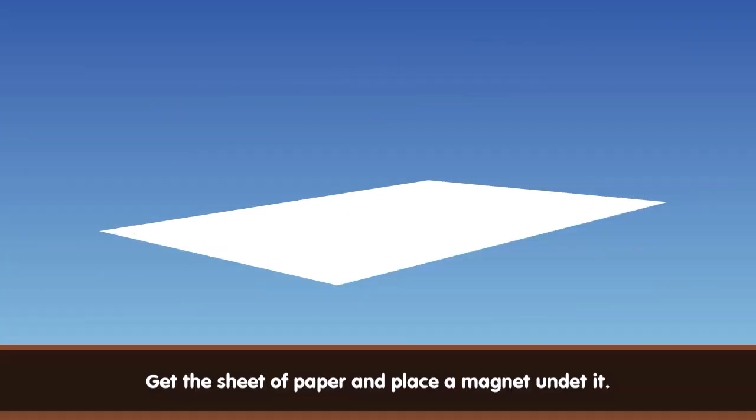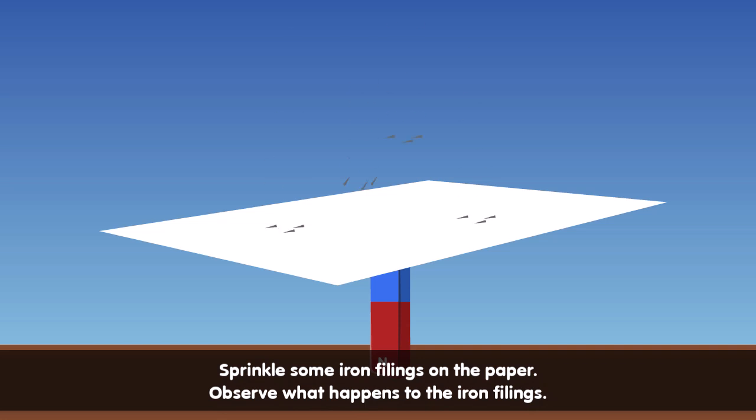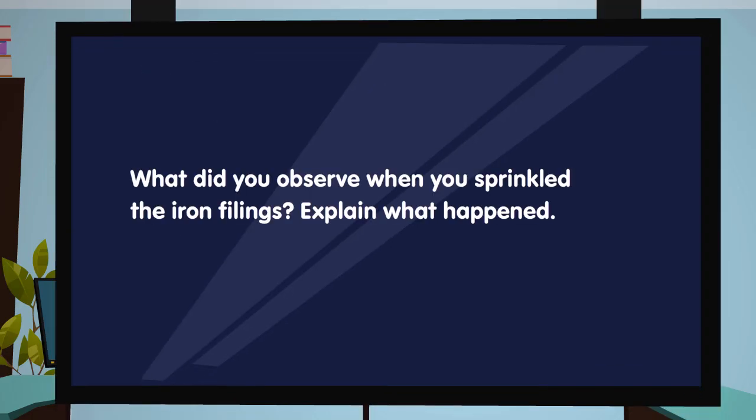Get the sheet of paper and place a magnet under it. Spread some iron filings on the paper. Observe what happens. What did you observe when you sprinkled the iron filings? Explain what happened.